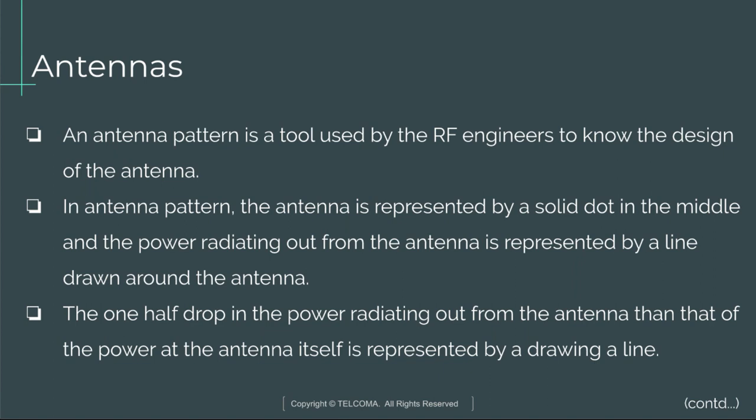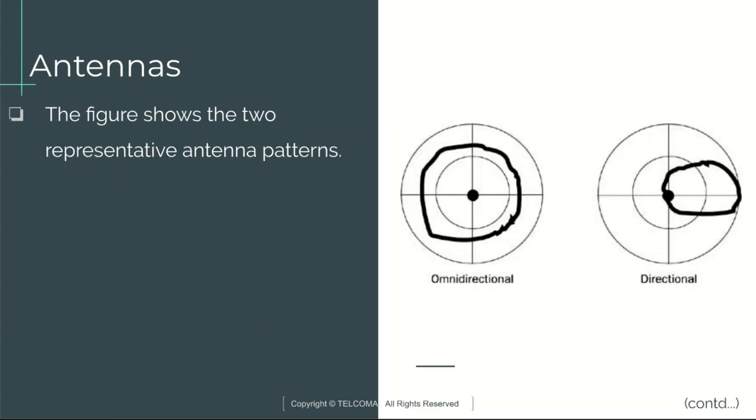In the case of directional antennas, the energy is concentrated over smaller areas. An antenna pattern is a tool used by RF engineers to understand the design of the antenna. In an antenna pattern, the antenna is represented by a solid dot in the middle, and the power radiating out is represented by a line drawn around it. A line is drawn to represent a one-half drop in the radiated power relative to the power at the antenna itself.